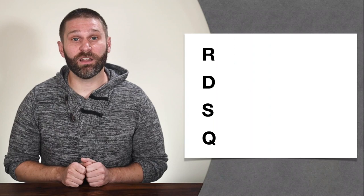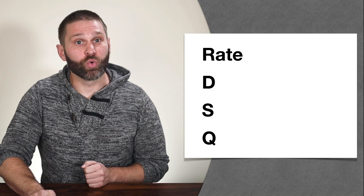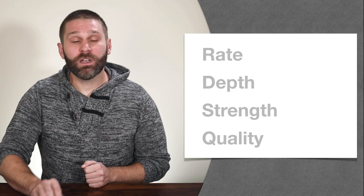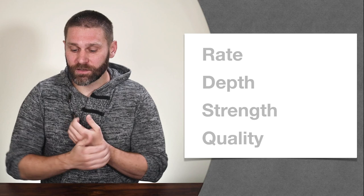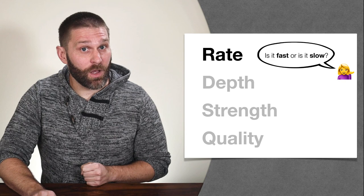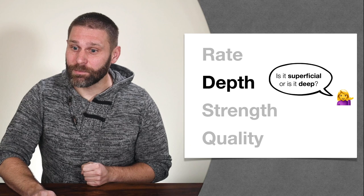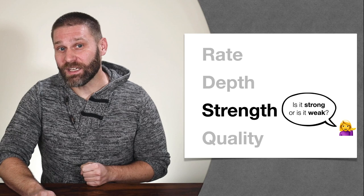RDSQ stands for Rate, Depth, Strength, and Quality. We put our fingers on the pulse and ask a series of questions: What's the rate — is it fast or slow? What's the depth — is it superficial or deep? What's the strength — is it strong and forceful or weak and forceless? And then quality — which of the 28 pulse images applies.